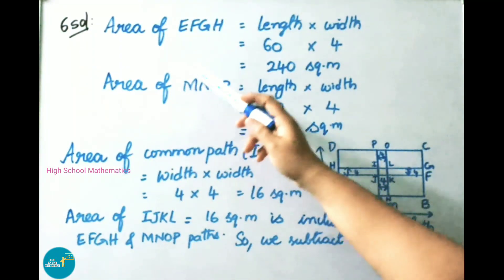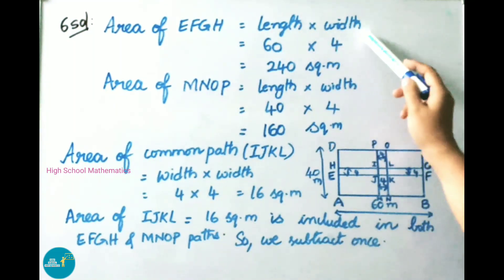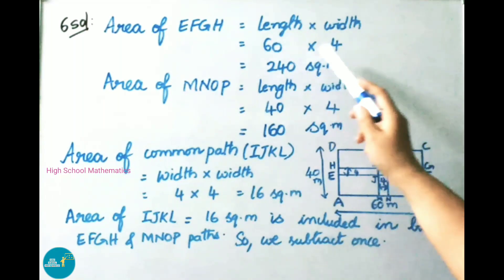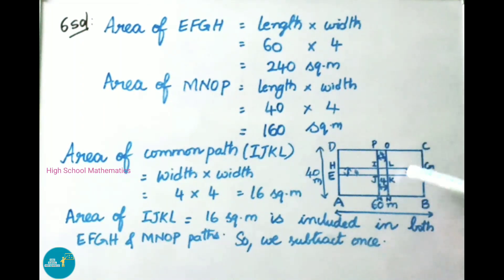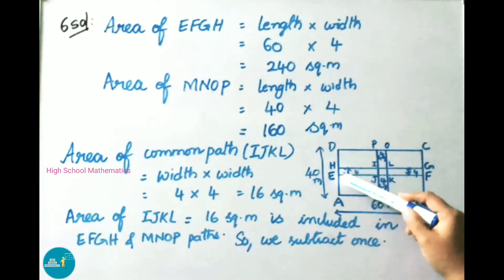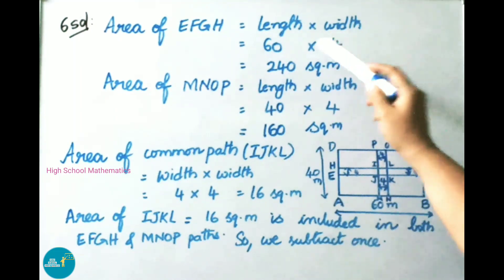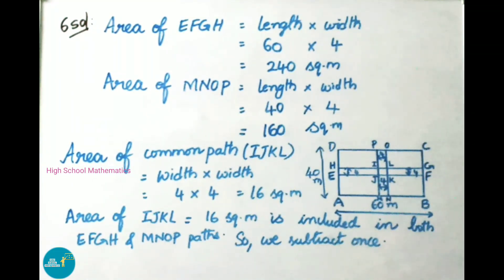The area of EFGH equals length into width. Taking length as 60 meters and width as 4 meters, we get 60 into 4 equals 240 square meters.